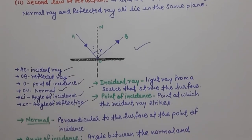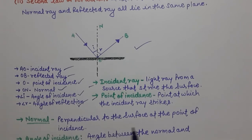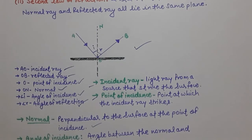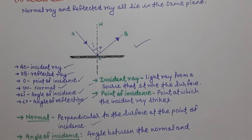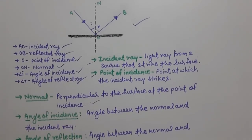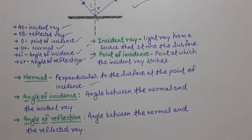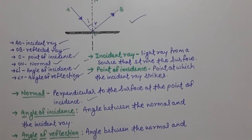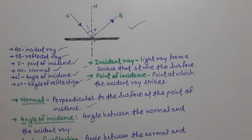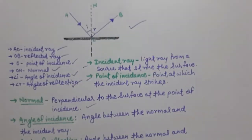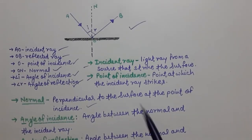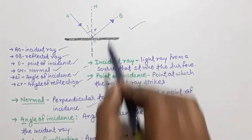Normal means the perpendicular to the surface at the point of incidence — ON represents the normal. Angle of incidence means the angle between the normal and the incident ray. Similarly, angle of reflection means the angle between the normal and the reflected ray, as shown in the diagram.